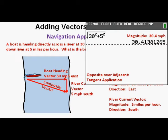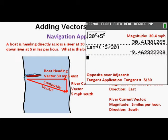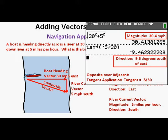For the direction, we have an opposite-over-adjacent situation which requires the tangent trigonometric ratio. We enter the inverse tangent of negative 5 over 30. It's negative 5 because the opposite side of the angle goes down from the horizontal. Pressing enter, we get an angle of about negative 9.5 degrees. Since we have negative 9.5 degrees, we call this 9.5 degrees south of east. The answer is 30.4 miles per hour at 9.5 degrees south of east.